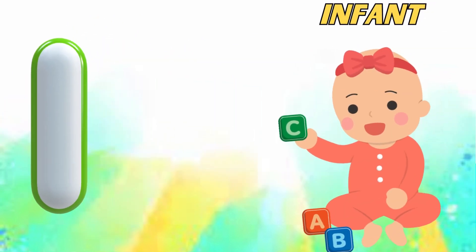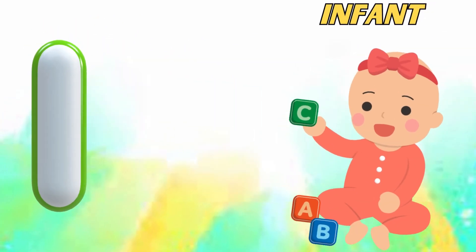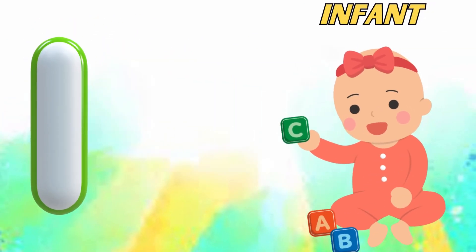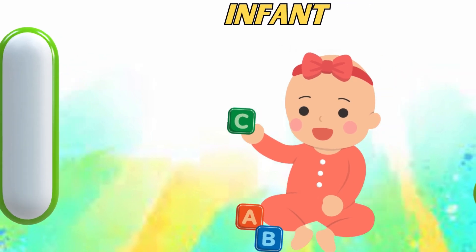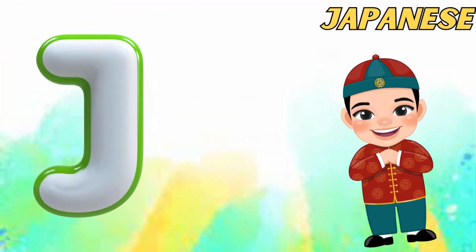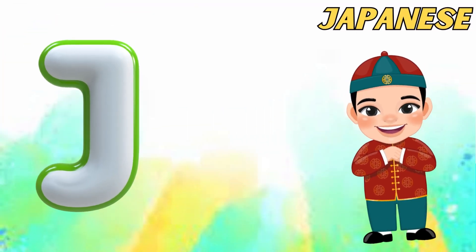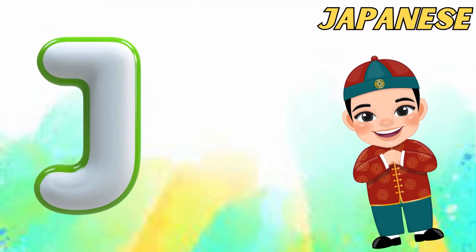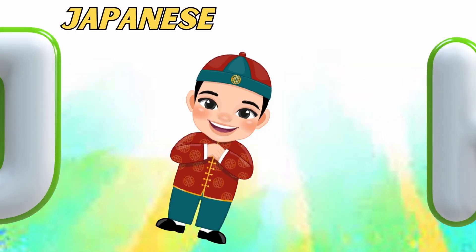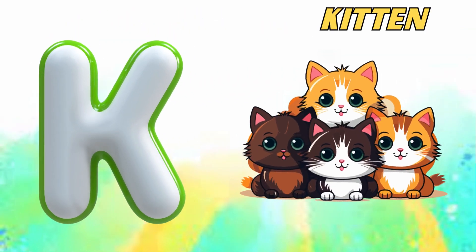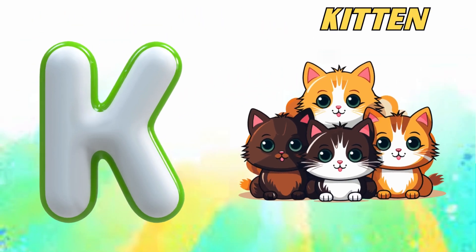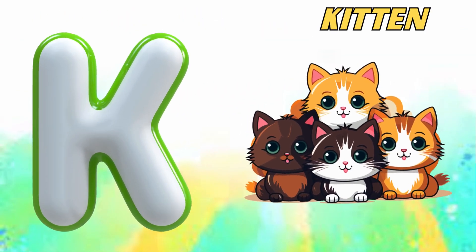I is for infant, i-i-infant. J is for Japanese, j-j-Japanese. K is for kitten, k-k-kitten.